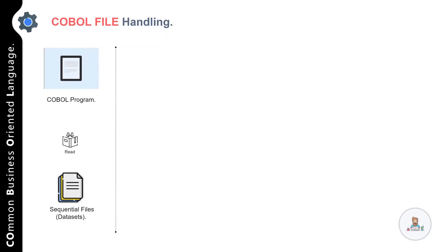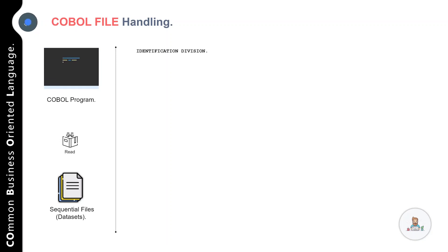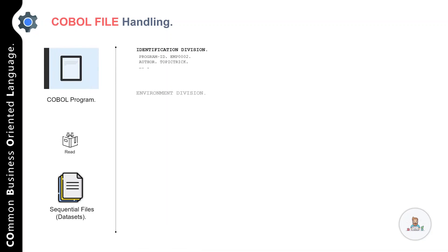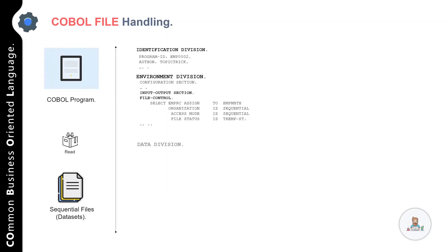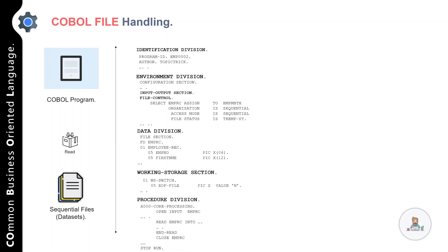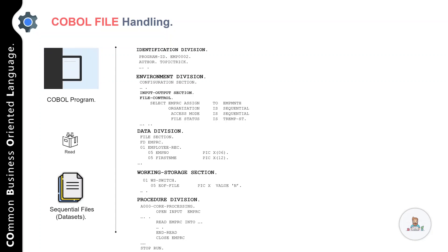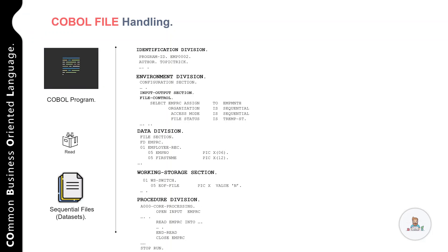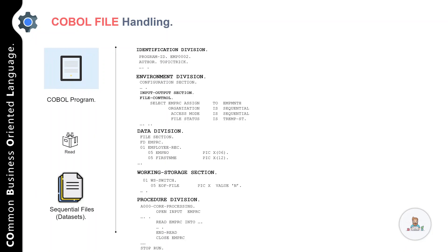In the following example we have a sample COBOL program dealing with a sequential file. There are four different divisions: identification division, environment division, data division, and procedure division. This program is reading data from the file. If you look at the structure of the program, you'll clearly notice that the file details are specified in the file control section, which is part of the environment division.